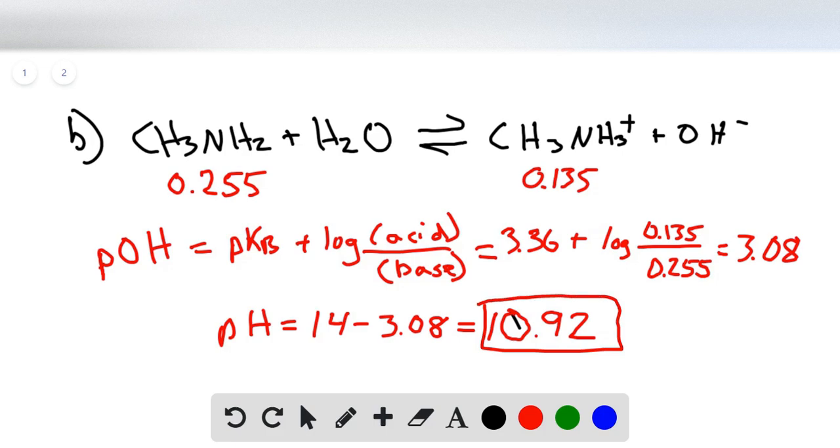So once again, we could have calculated pH from the Henderson-Hasselbalch equation by using the Kb to calculate the Ka and then the pKa. But this way we can use the values directly from the table and then just calculate pH at the end by doing a simple calculation here.